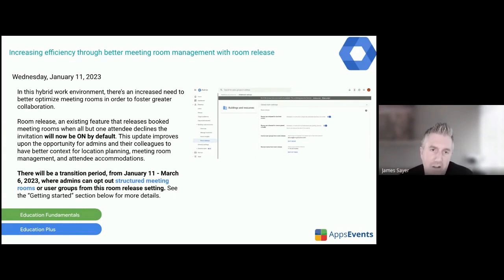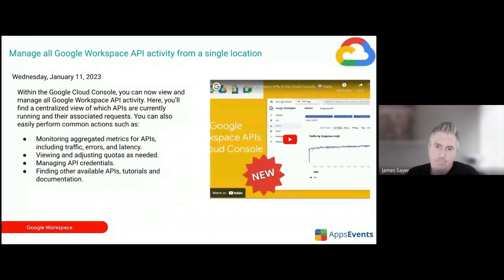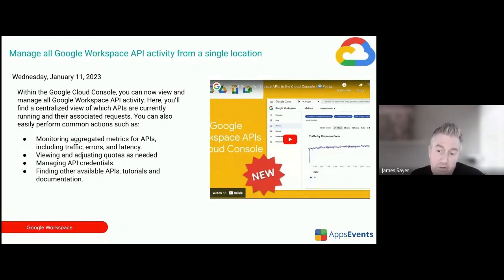Moving on — a niche update here. If you've booked a physical room using Google Calendar for a meeting and then everybody declines the meeting apart from one person, that room's availability is freed up. So if you're using Google Calendar for room management and booking, this is a useful update.